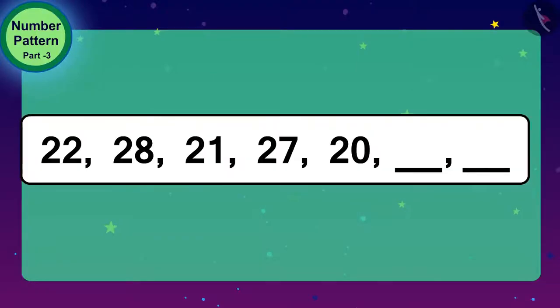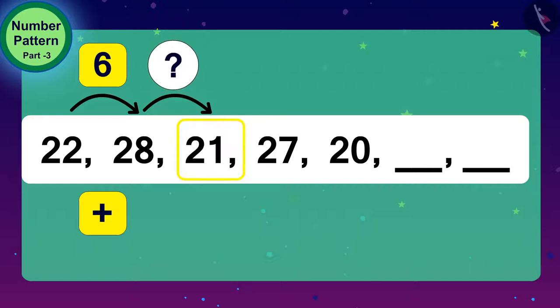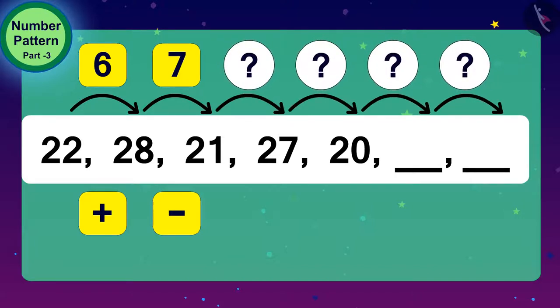Let us see what is unique in this number pattern. First, we will look at the first two numbers of this number pattern. How do we get 28 from 22? Exactly! By adding 6. And, what do we have to do to get 21 from 28? Yes, we have to subtract 7 digits from 28. Have you got any rules so far?